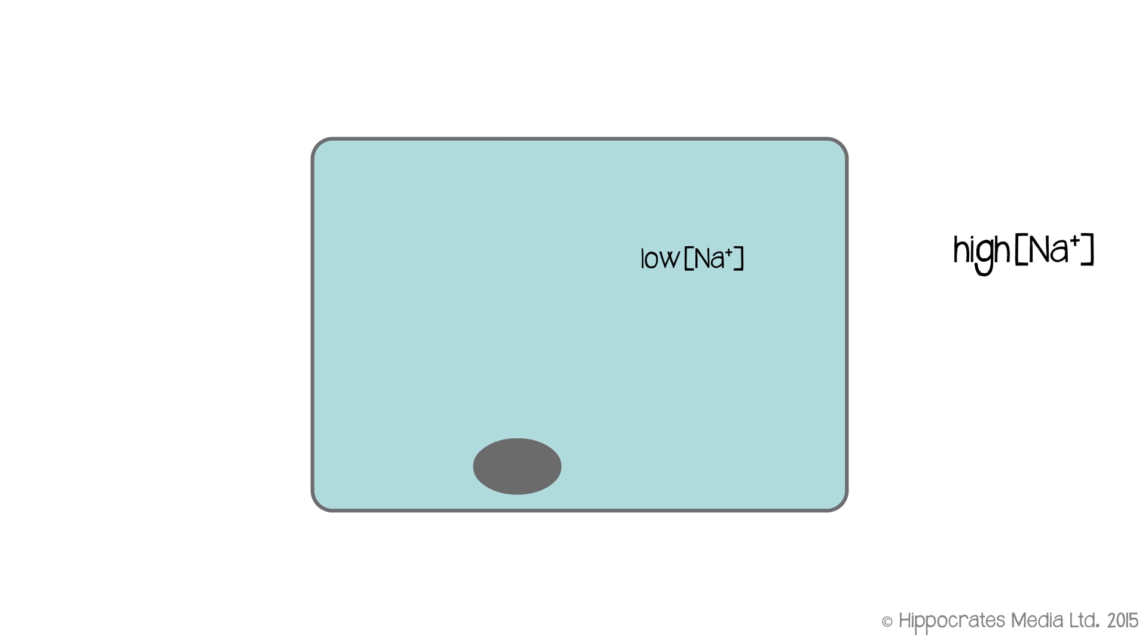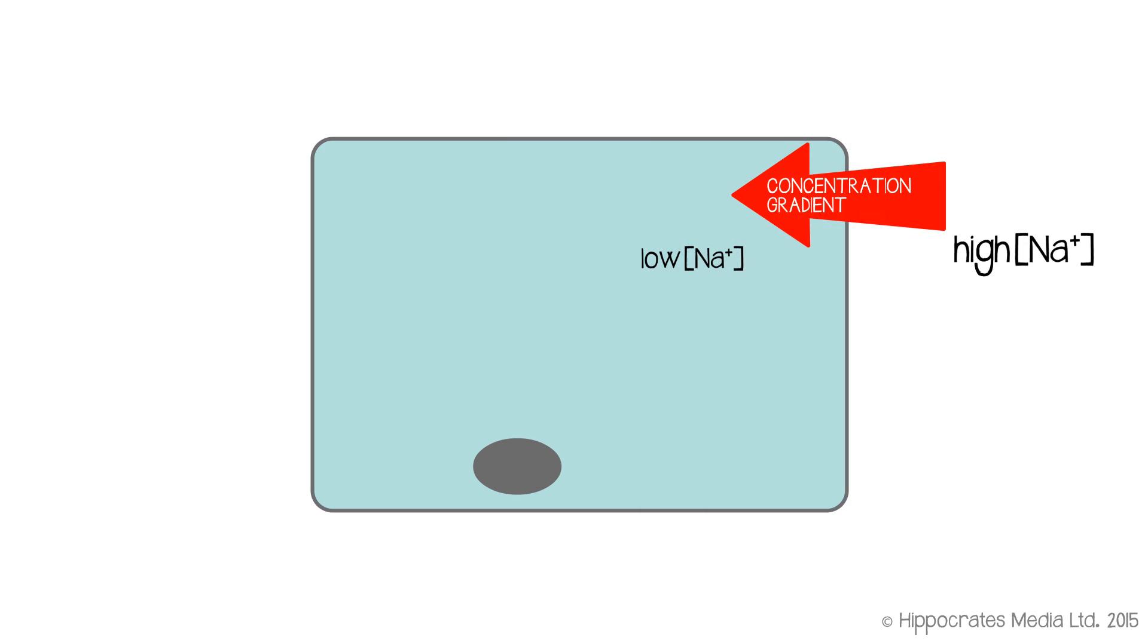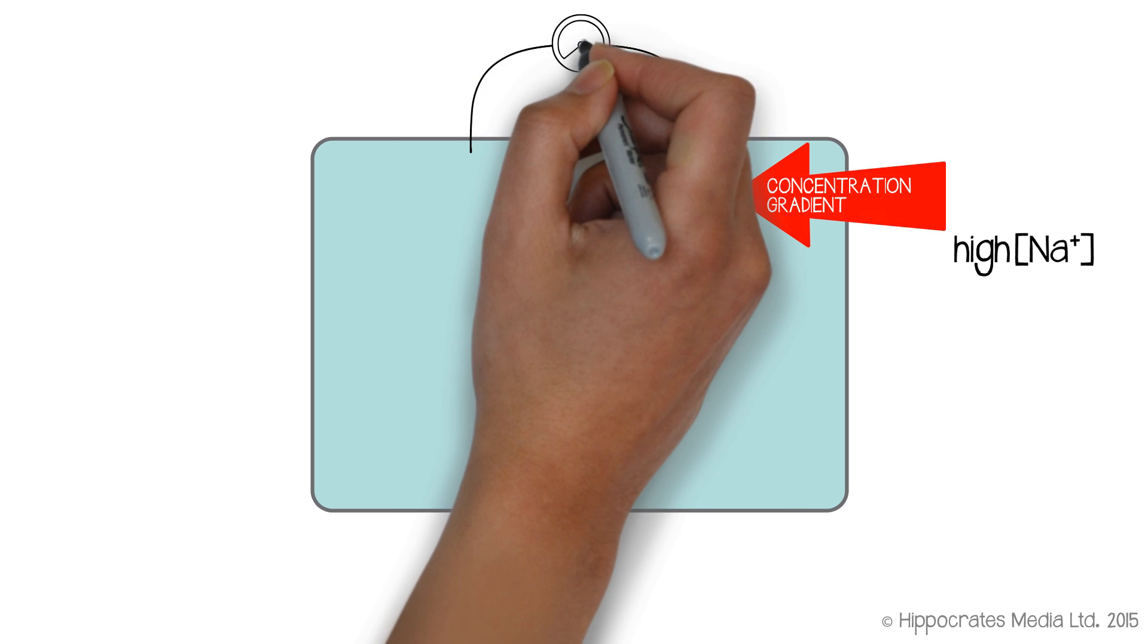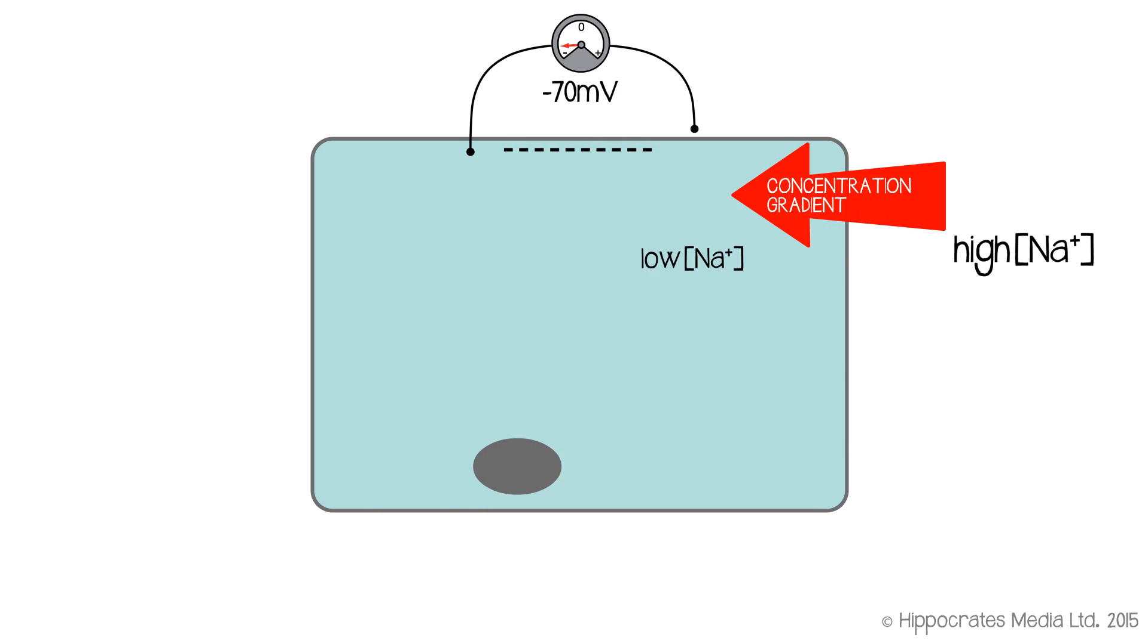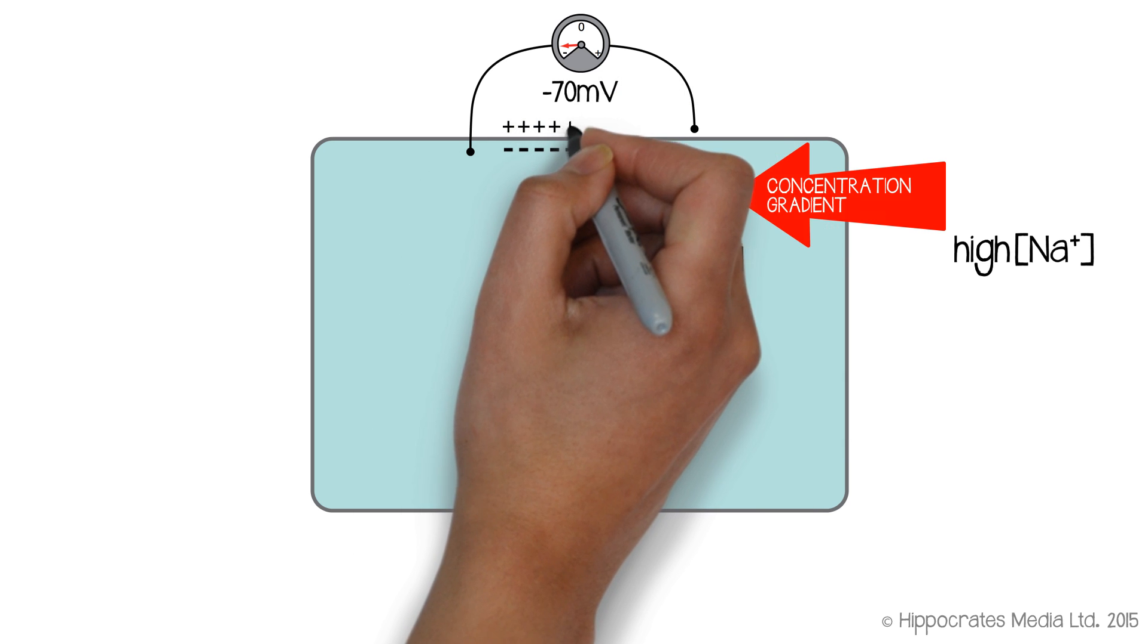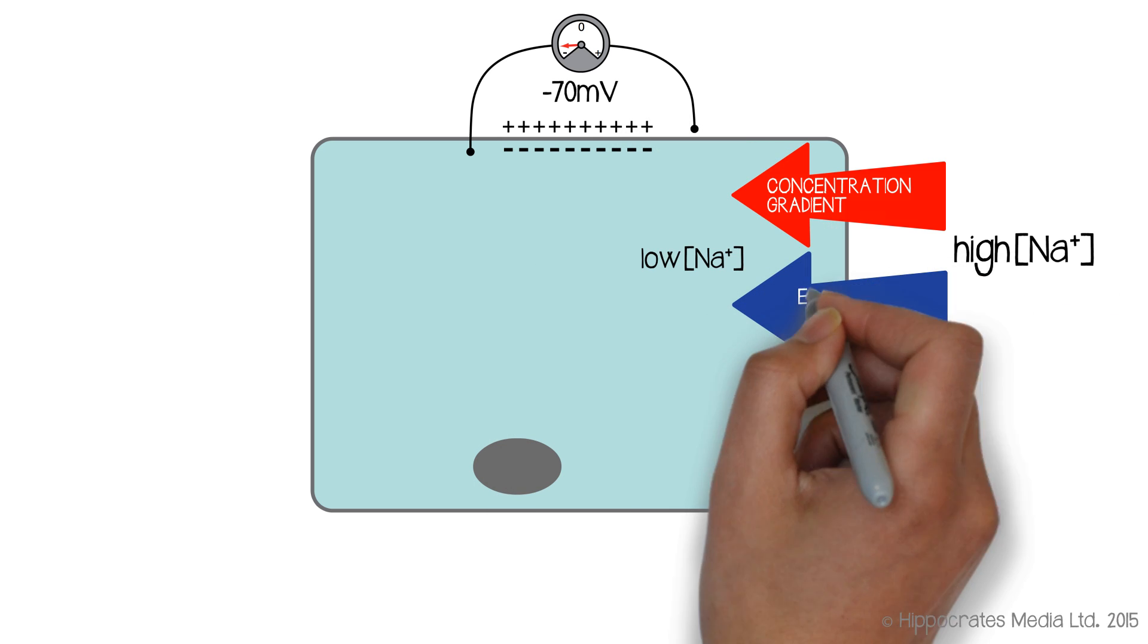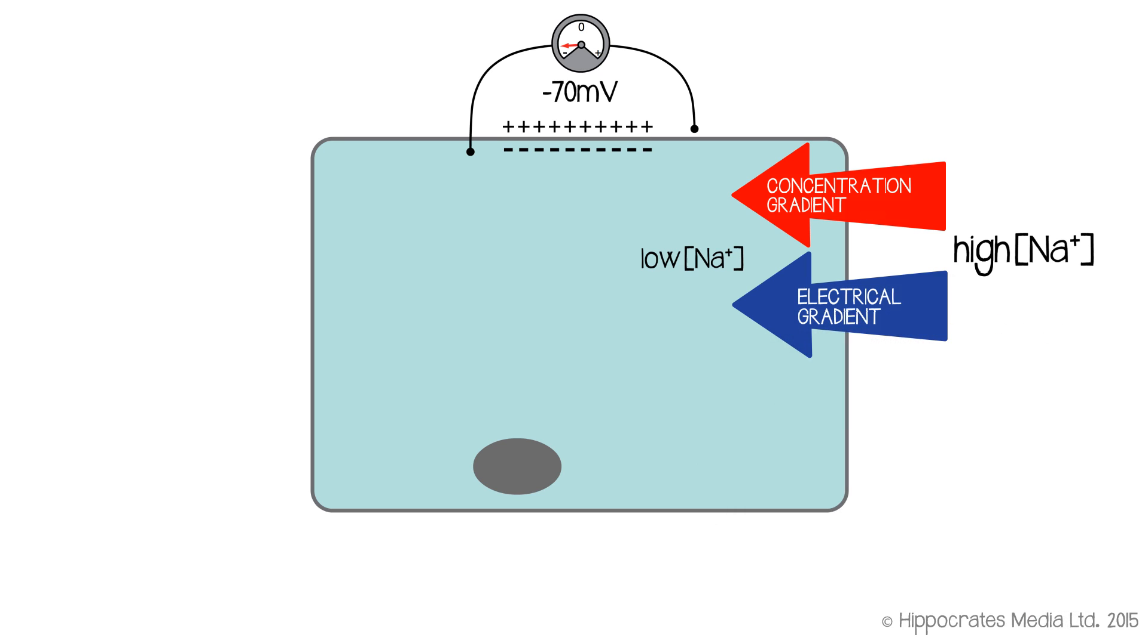So if we think about the sodium, there's a concentration-based force for sodium into the cell. It wants to come in. But I've told you that the membrane has a resting membrane potential in a nerve cell of minus 70 millivolts. The inside is negative. So if you think about it from an electrical point of view, sodium from an electrical point of view also wants to enter the cell.